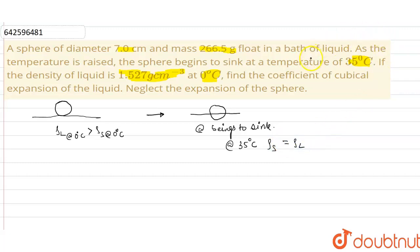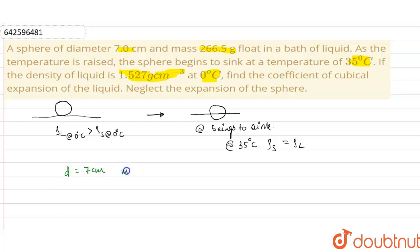Now, to solve this question using this concept: the diameter of the sphere is 7 centimeters and the mass of the sphere is 266.5 grams. From these values, we can calculate the density of the sphere, since density equals mass divided by volume.